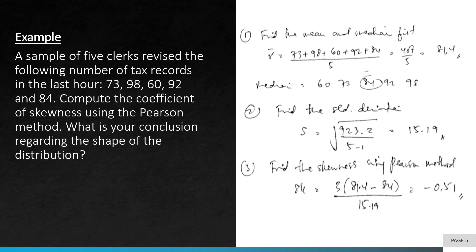And finally, to find the skewness using the Pearson method, we simply input all of the values into this formula. SK equals 3 times 81.4 minus 84 over 15.19, and it gives you minus 0.51. As for the conclusion regarding the shape of the distribution, we can see that the distribution is slightly skewed to the left.